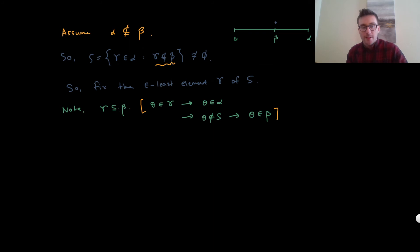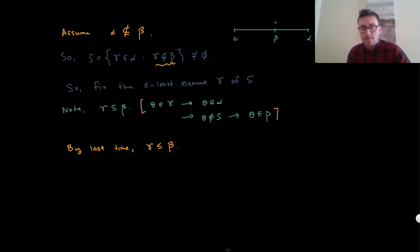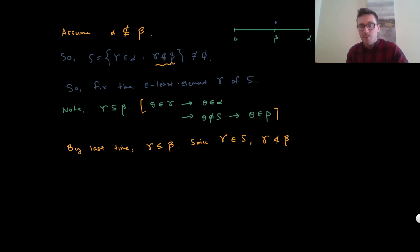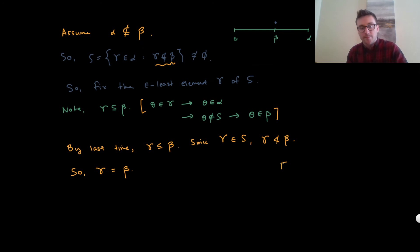Since gamma is a subset of beta, by our previous proposition, it must be the case that gamma is less than or equal to beta. But since gamma is an element of S, gamma is not less than beta — because being less than means being an element of, and gamma is not an element of beta. So it must be that gamma and beta are equal. But then we're done: gamma is an element of alpha, so beta is an element of alpha.